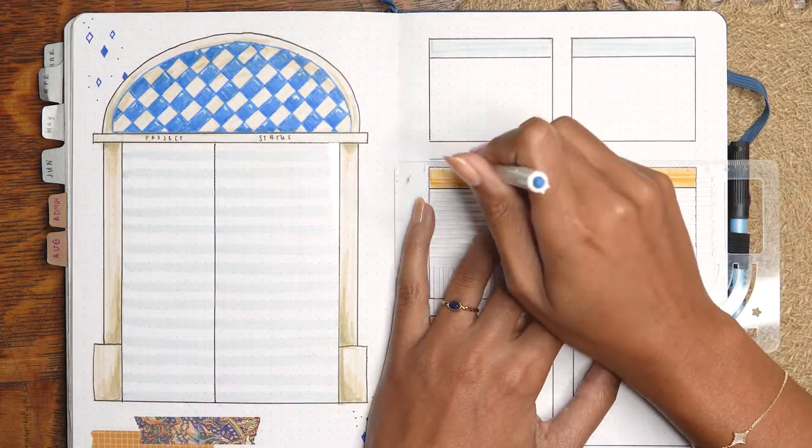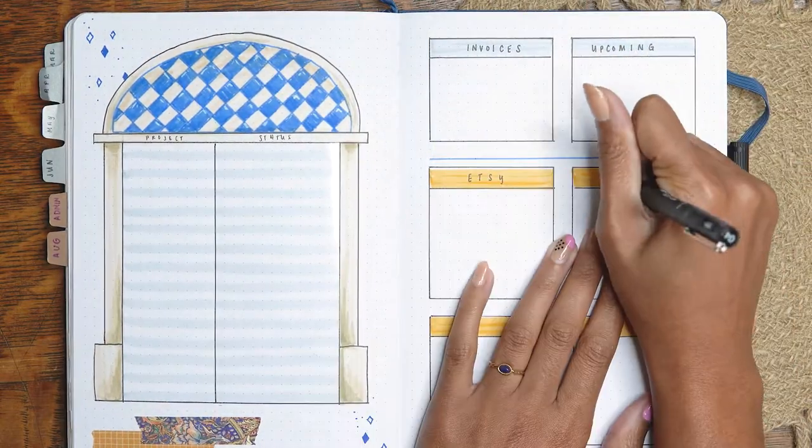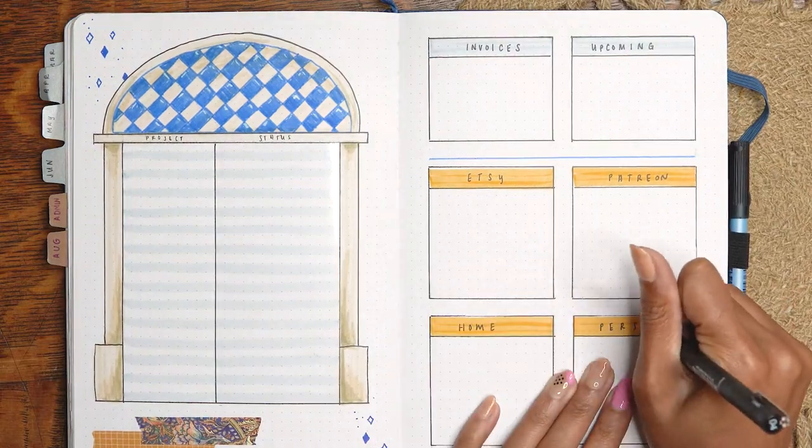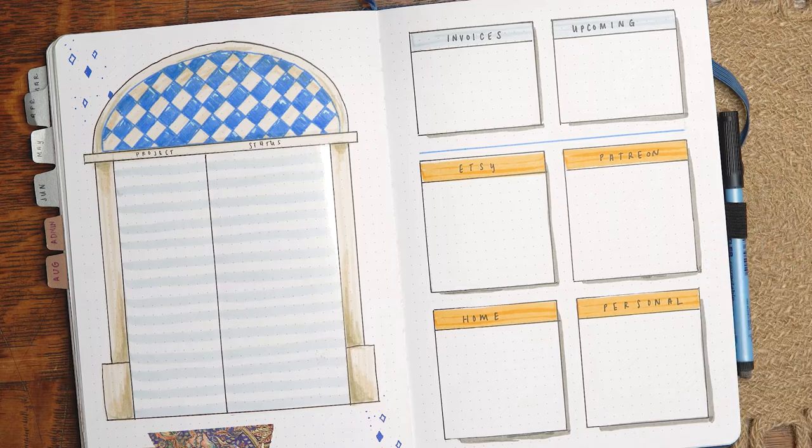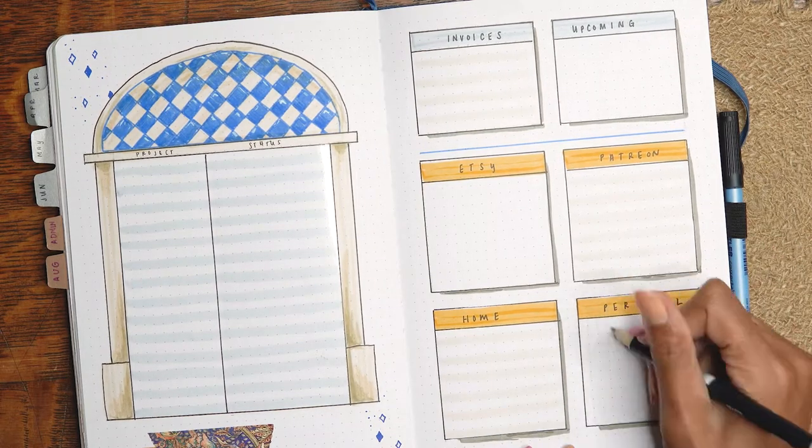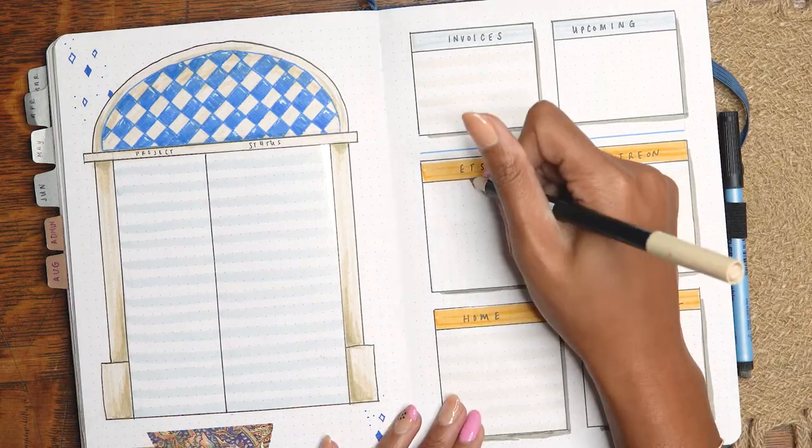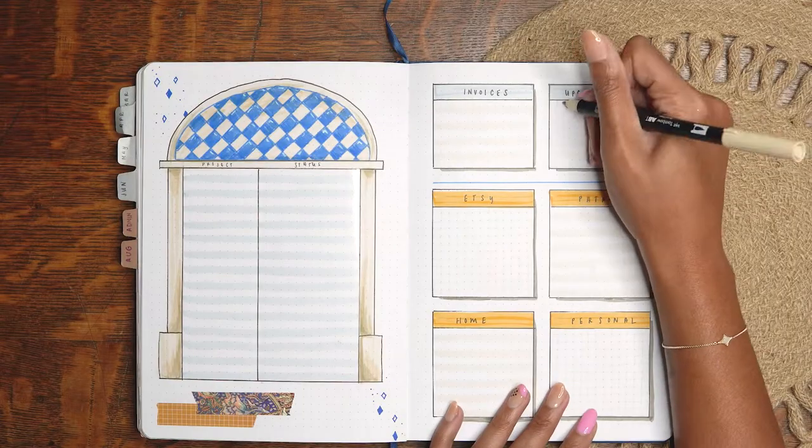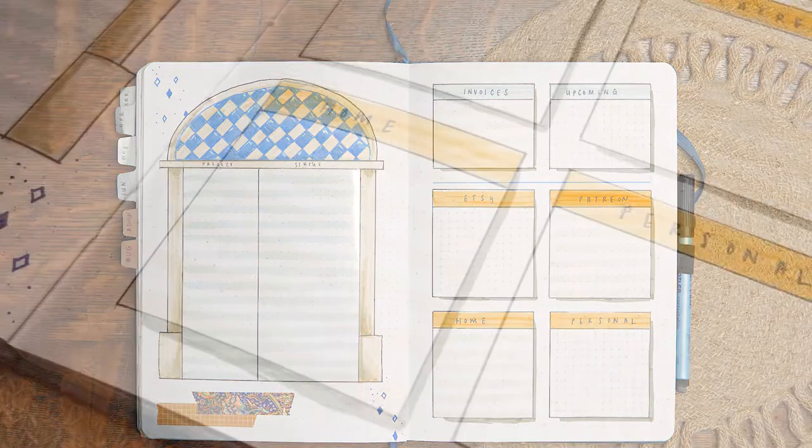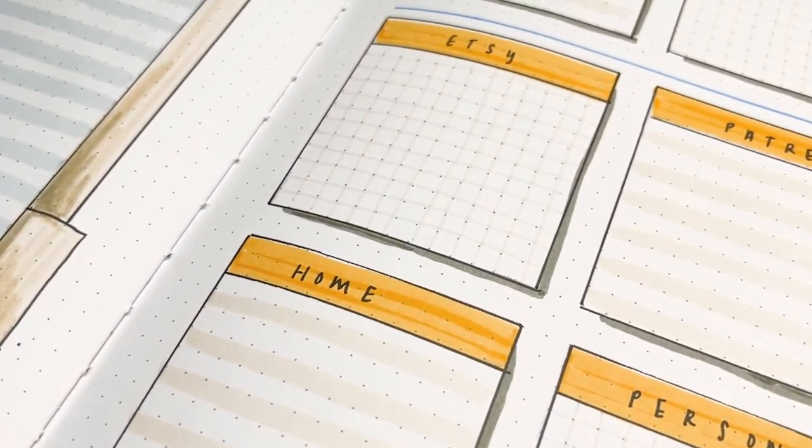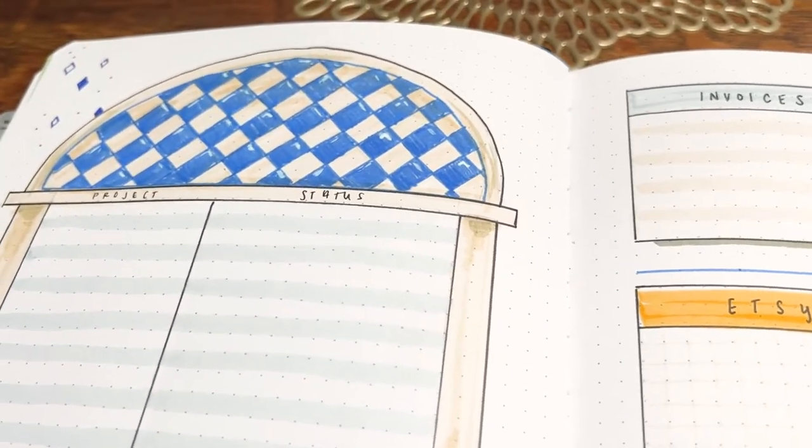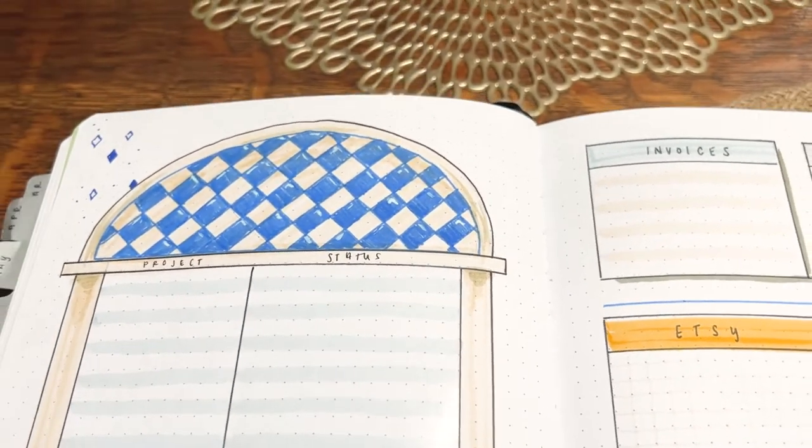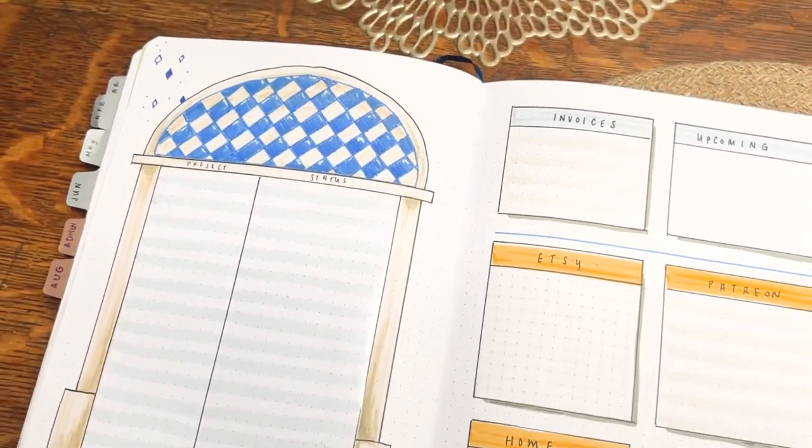The next page is just for some monthly task boxes broken down by category. The top will look familiar for monthly invoices and upcoming projects. But under that are some new boxes. I typically track stuff for Etsy and Patreon, home projects and personal things inside of my weekly spreads. But I've been feeling that I'm just migrating things over and over, things get lost in the work shuffle. So I'm going to try to utilize this one dedicated area for the entire month.